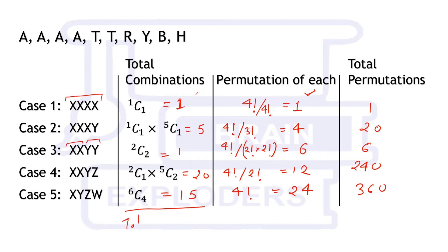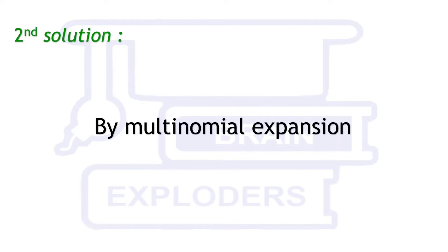Adding all the permutation totals: 1 + 20 + 6 + 240 + 360 gives us total combinations equal to 42 and total permutations equal to 627. These are the two required answers. Now let us solve the same problem with the help of multinomial expansion.